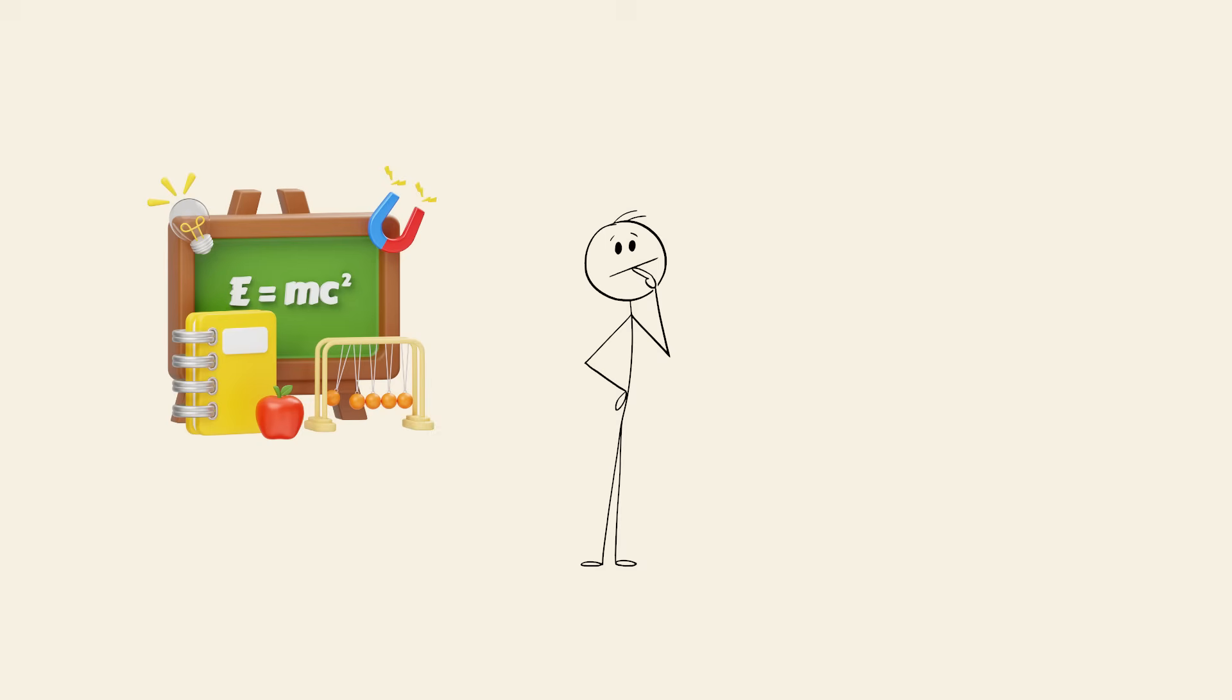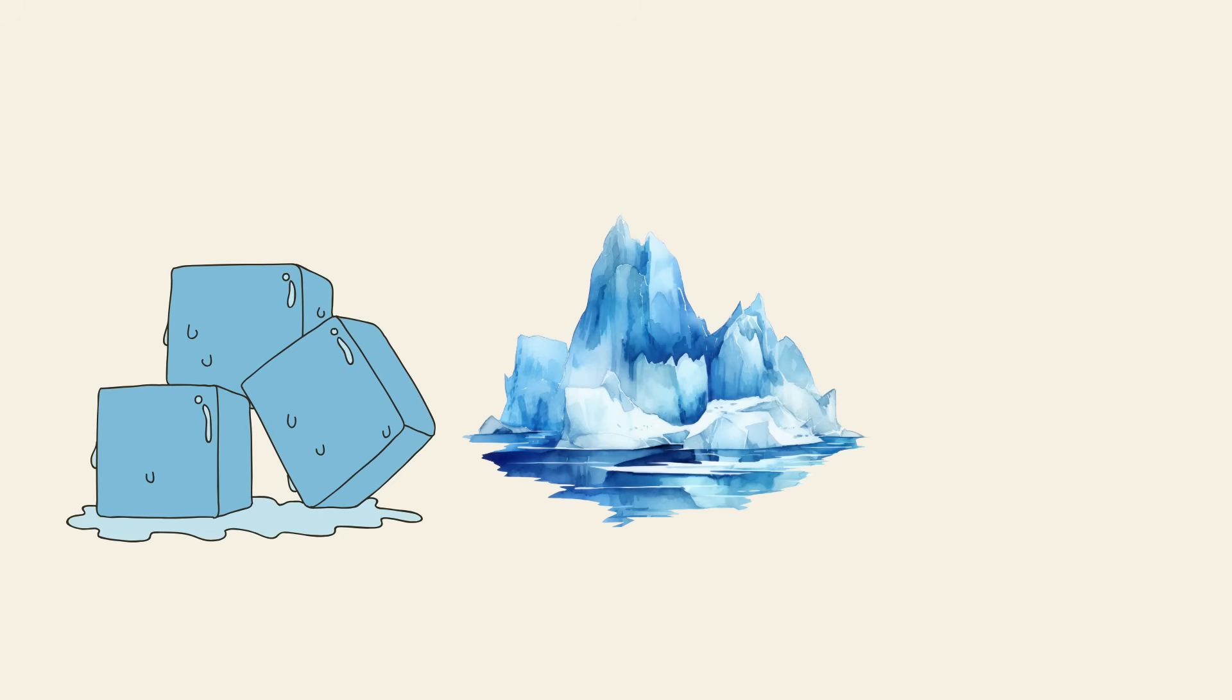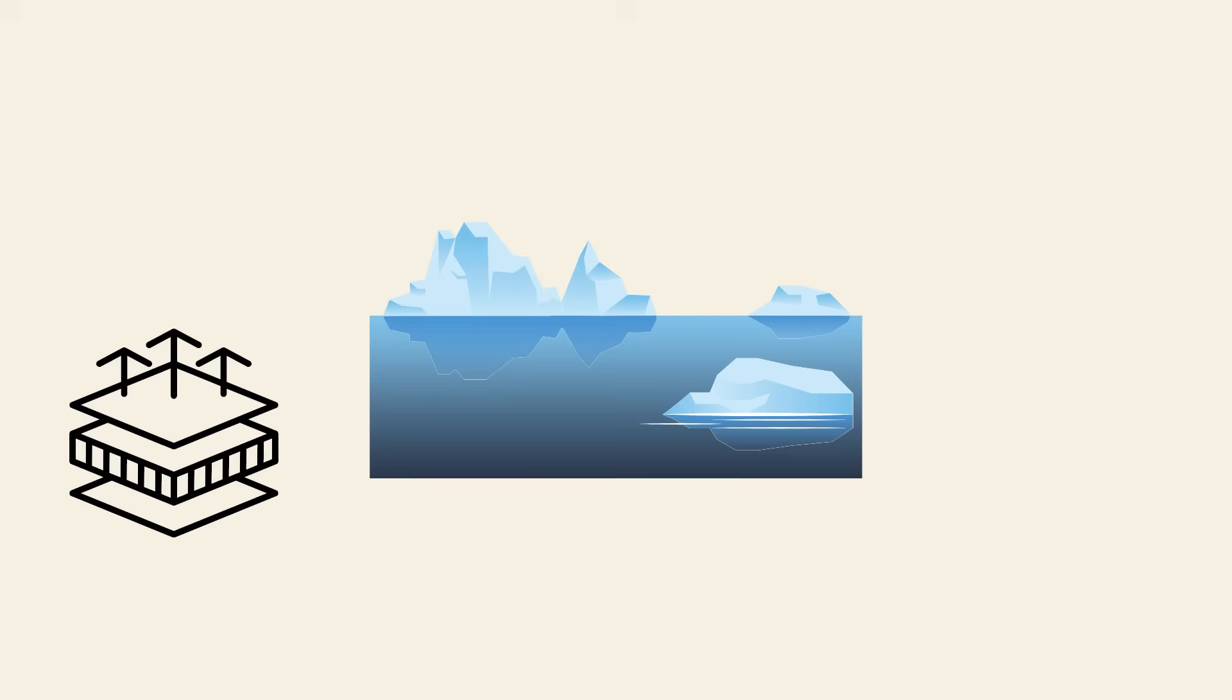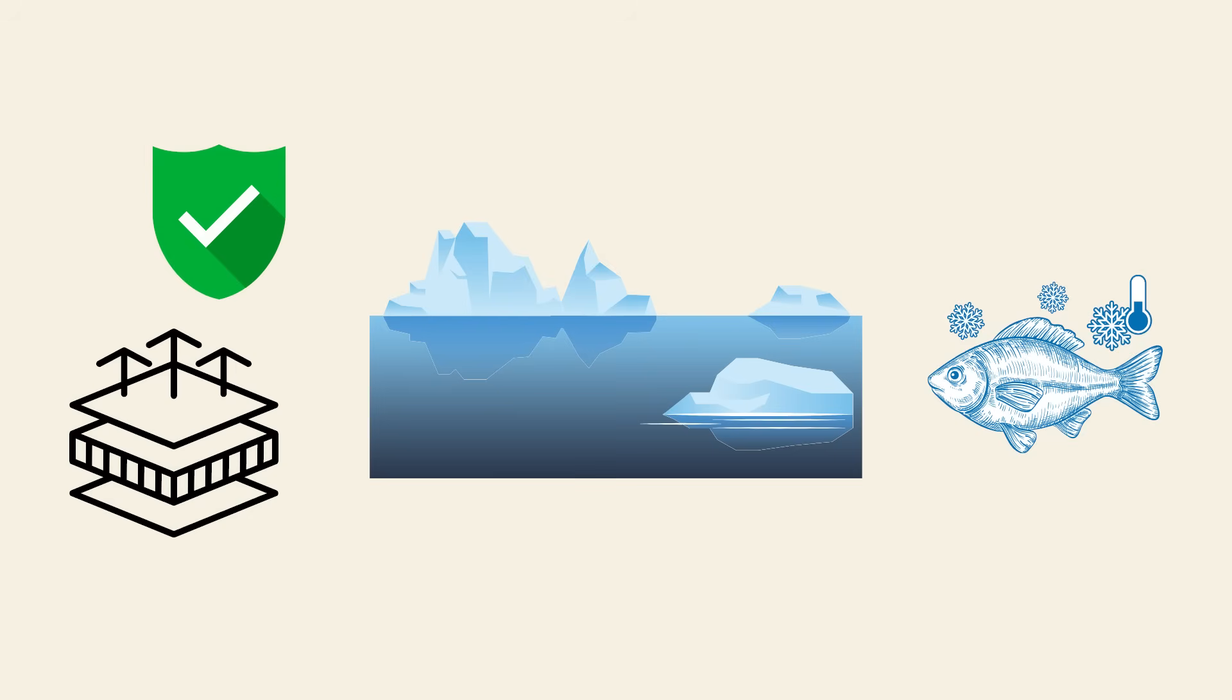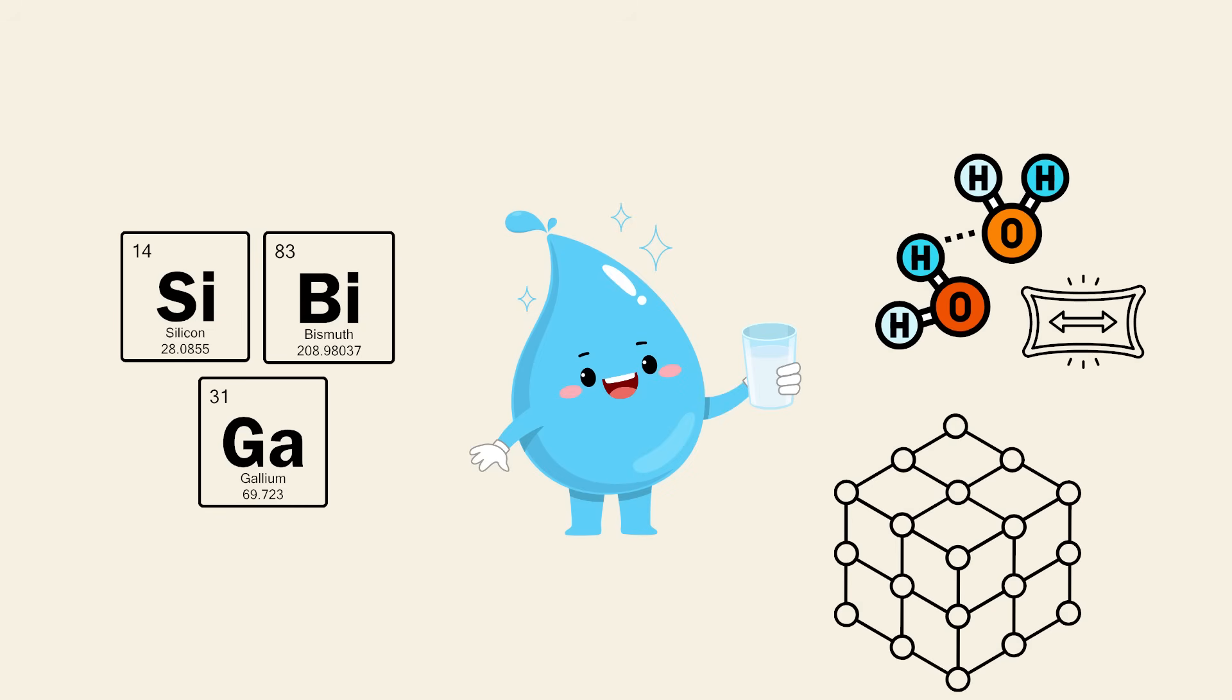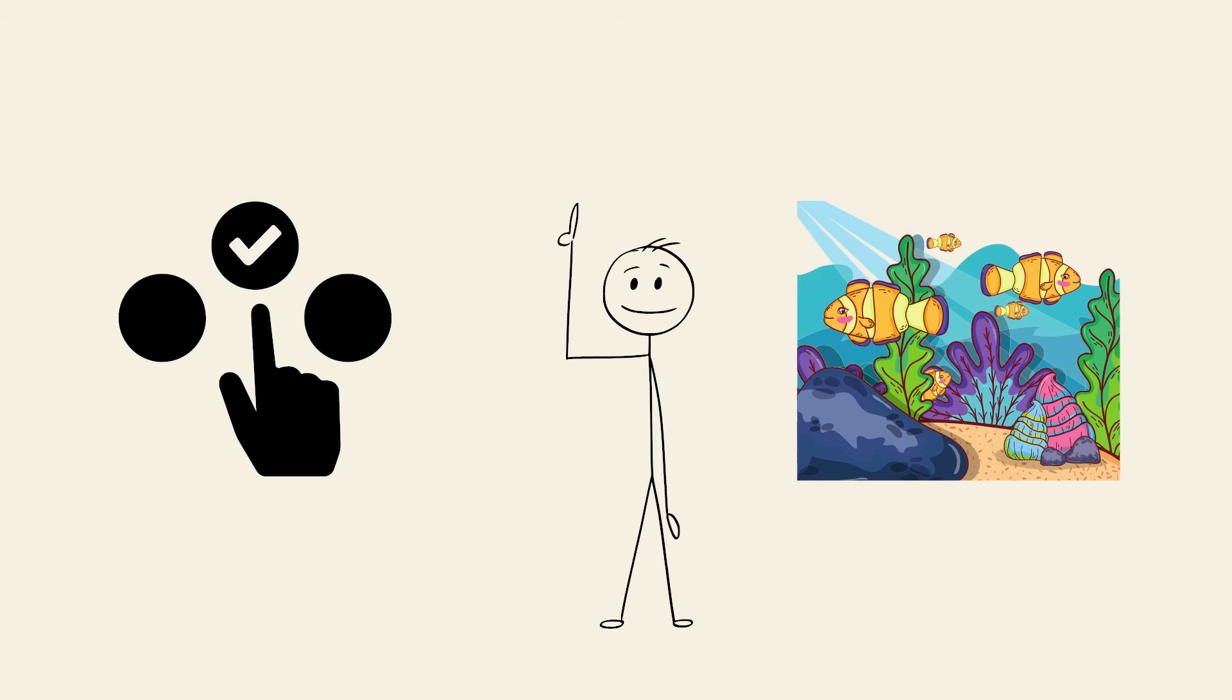This seemingly small quirk of physics has huge consequences for life on Earth. If ice sank, lakes and oceans would freeze from the bottom up, making life underwater nearly impossible in cold regions. Instead, floating ice forms an insulating layer that protects the liquid water below, allowing fish and other organisms to survive. This property is unique to water and a few other substances, and it's due to the hydrogen bonds between water molecules. These bonds stretch out as water freezes, locking the molecules into that lighter lattice structure. It's a perfect example of nature's odd design choices that make life possible in unexpected ways.